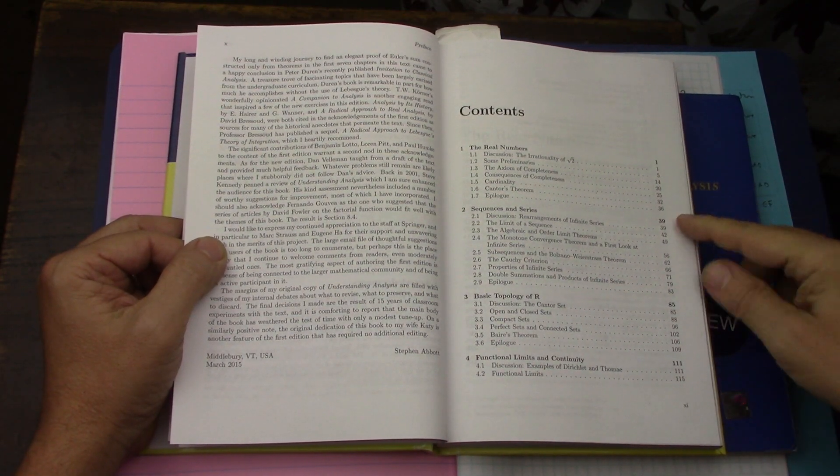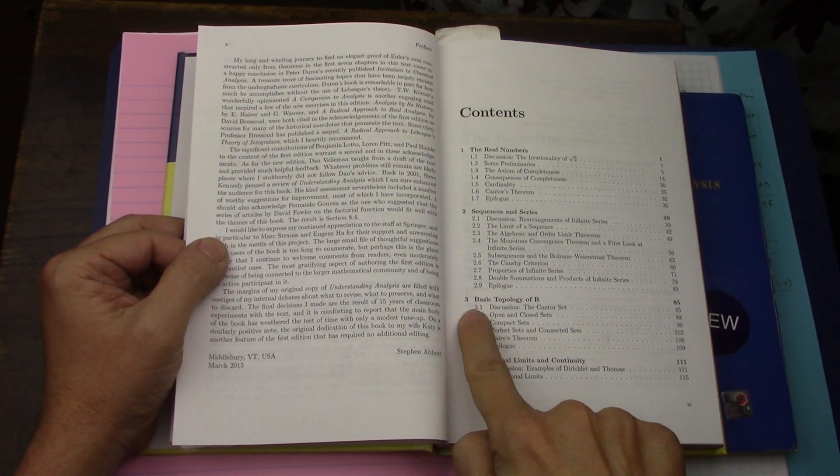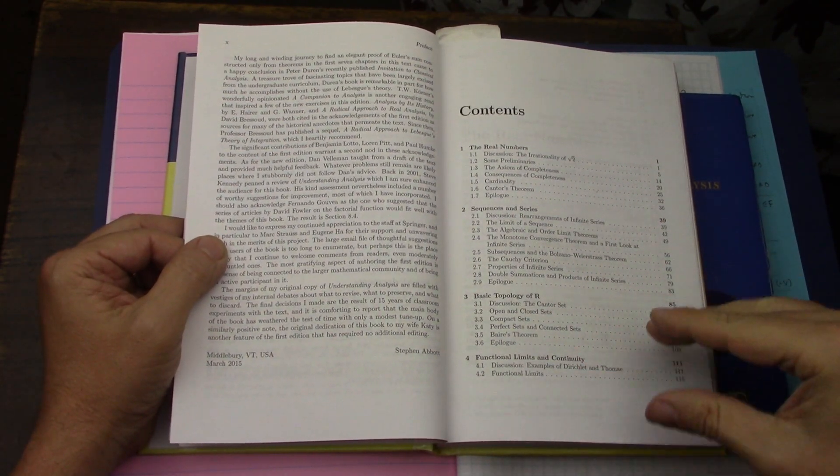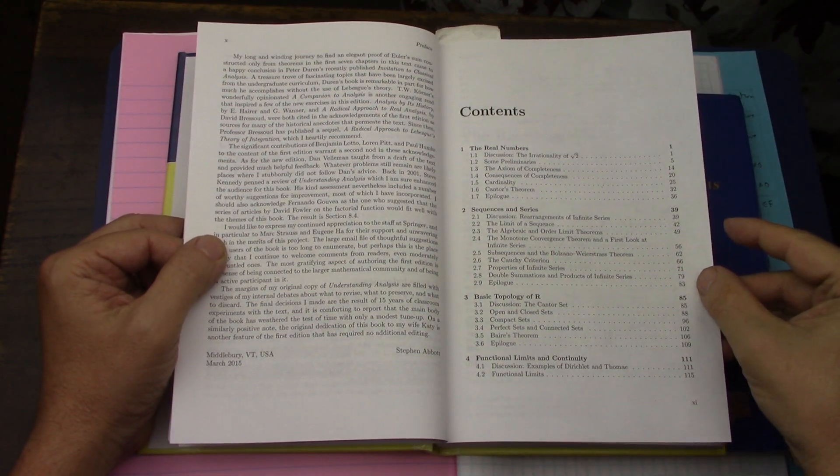So he goes through the real numbers, sequences, but he does topology chapter three, unlike Rudin, which has it in chapter two. These are flipped when compared to Rudin, baby Rudin.